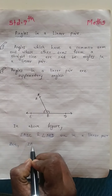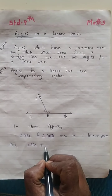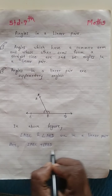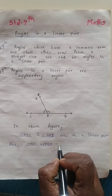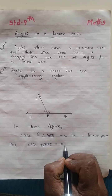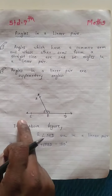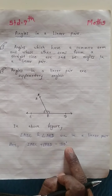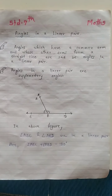Angle ABC plus angle ABD — these two angles are supplementary. That means their sum is 180 degrees. Thank you.